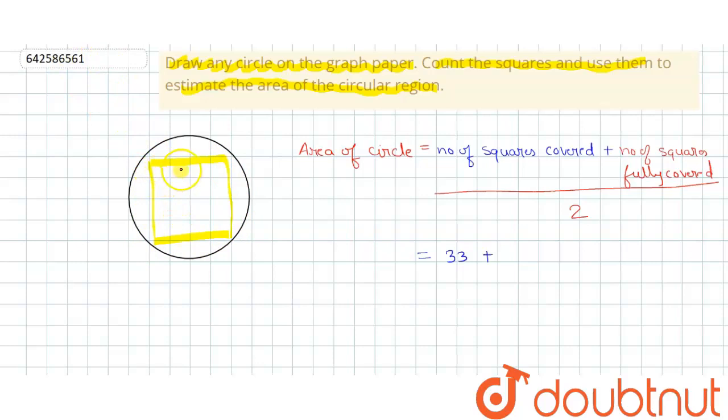1, 2, 3, 4, 5, 6, 7, 8, 9, 10, 11, 12, 13, 14, 15, and 16. So 16 squares are fully covered.